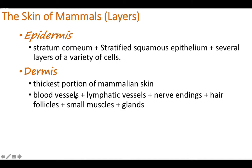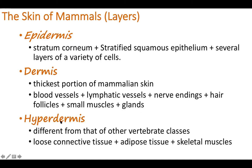The dermis contains blood vessels, lymphatic vessels, nerve endings, hair follicles, small muscles attached to hair follicles, and several types of glands. The third layer is the hypodermis, present below the dermis. It is different from other vertebrate classes, as it contains loose connective tissues and adipose tissues. Adipose tissues are fat cells that store fat and provide energy when needed. There are also skeletal muscles attached to the skin, which help in movement of the skin.